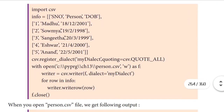First, as usual, we want to import the CSV module. Next, one list is created. In the list, there are three records with details of each person: serial number and date of birth. Next, we use csv.registerDialect, where my_dialect quoting is equal to csv.QUOTE_ALL — a new dialect is being registered here.